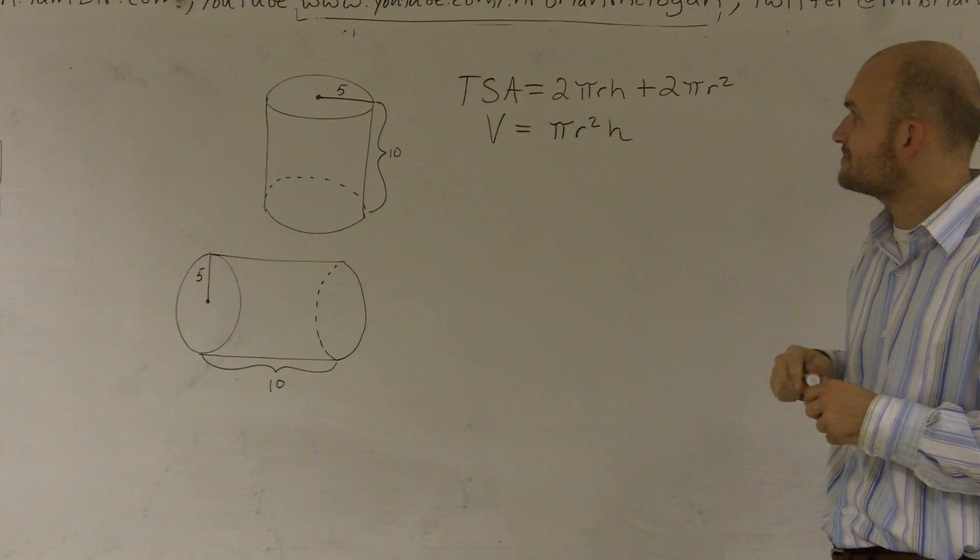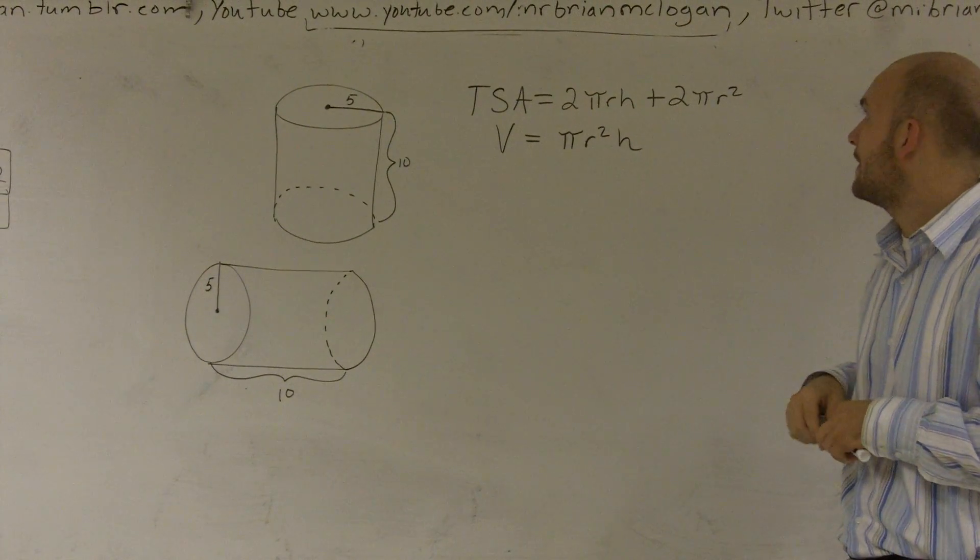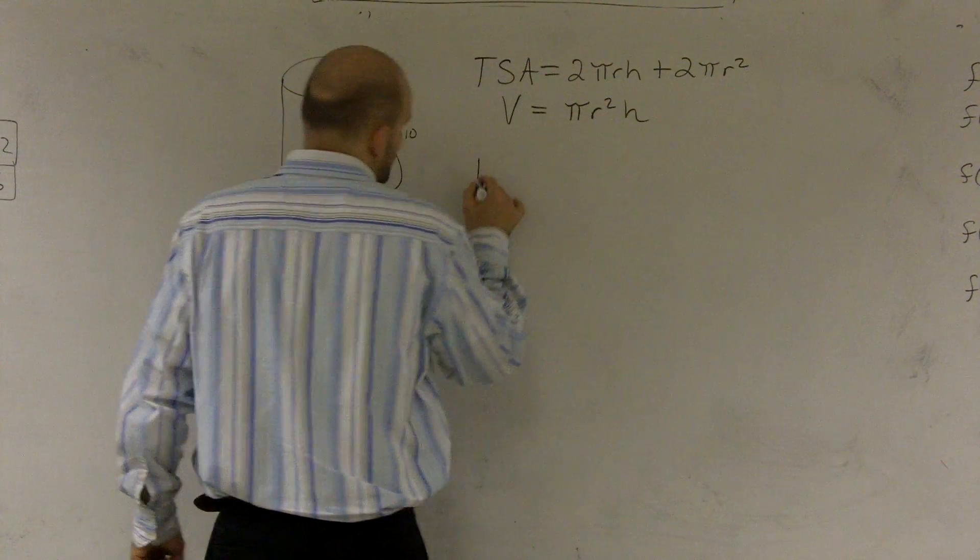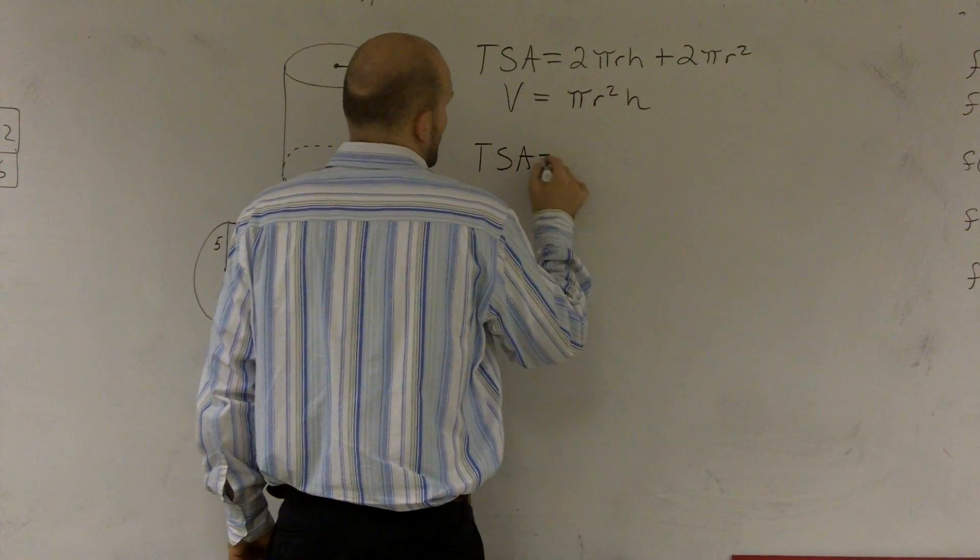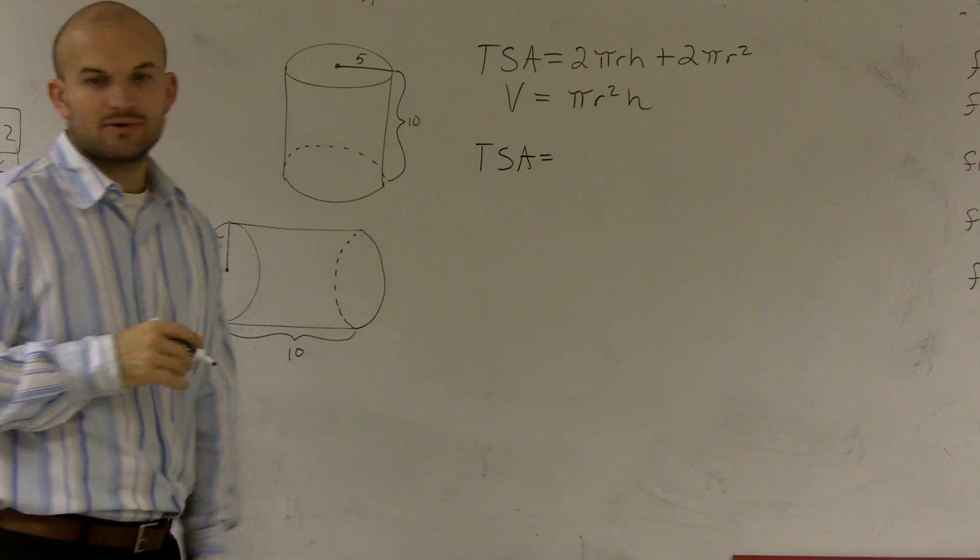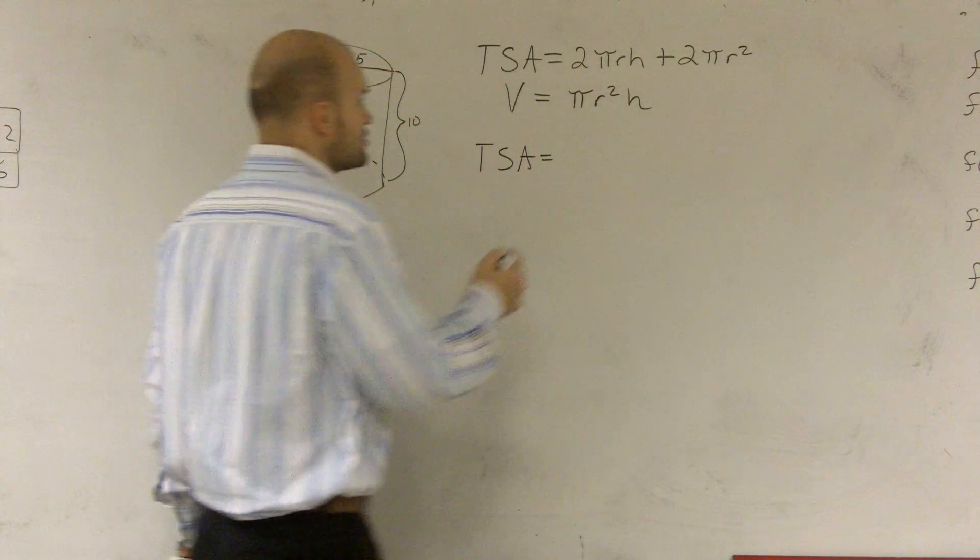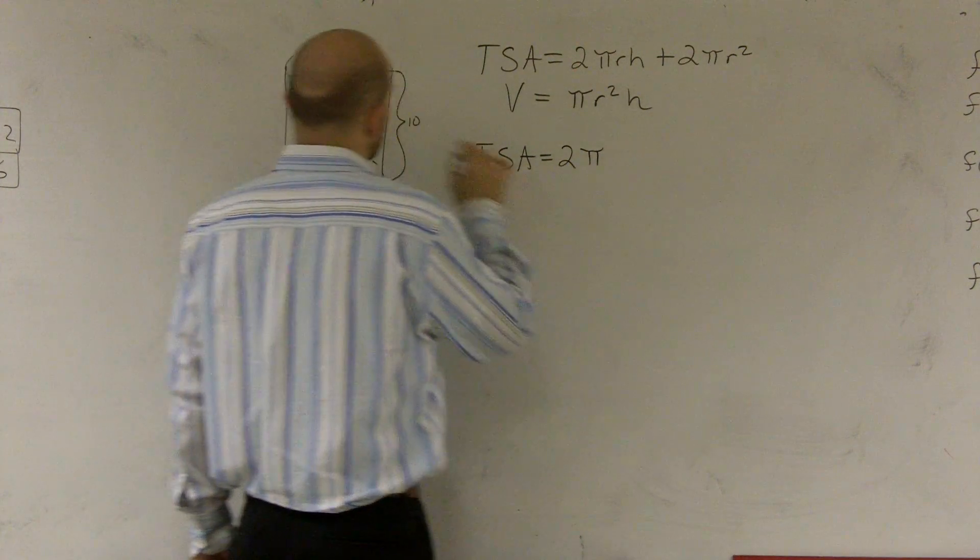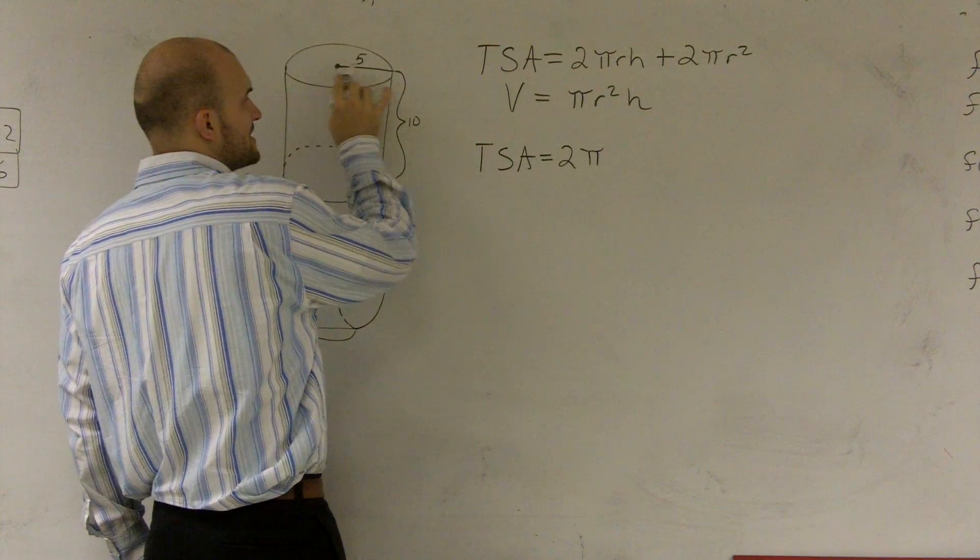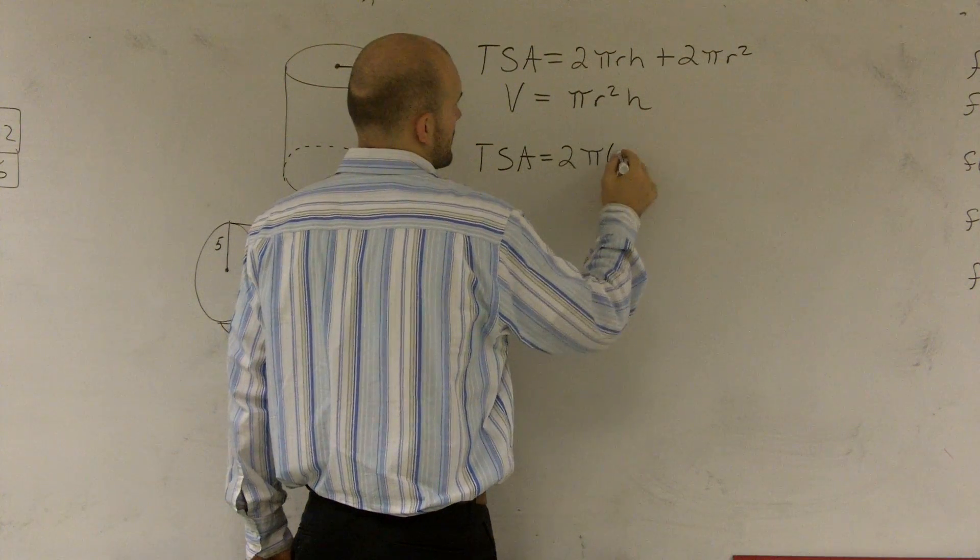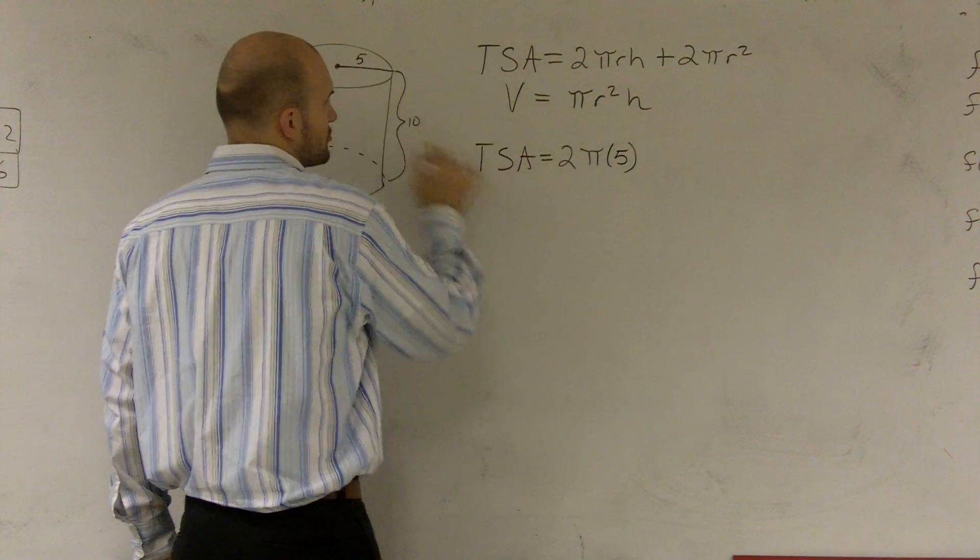So to do that, I need to do 2 times pi times r times h plus 2 times pi r squared. Really, all I'm going to do to find my total surface area is not calculate with pi—I'm just going to leave pi and leave my answer in terms of pi. So I'm going to have 2 times pi. My radius, remember, is from the center to the outside of my circle, which would be 5, times my height, which will be 10.